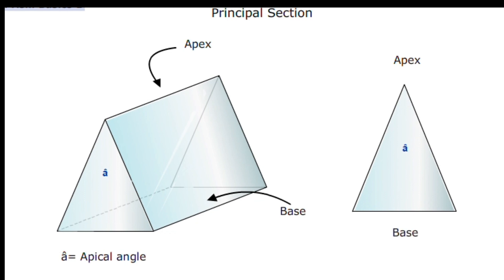The orientation of the prism in front of the eye will affect the position at which the eye perceives any object to be when viewed through the prism. It is therefore important to specify accurately the orientation of the prism so that its effect on the eyes is known when incorporated into a refractive correction. The orientation of a prism is specified in terms of the direction of its base.